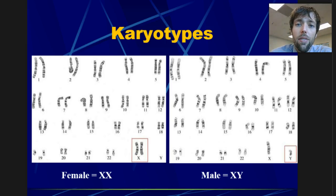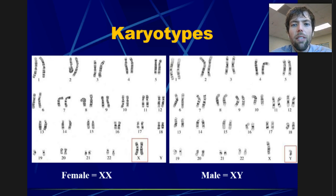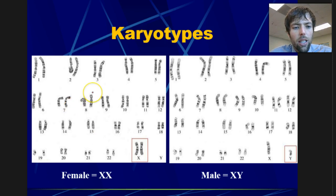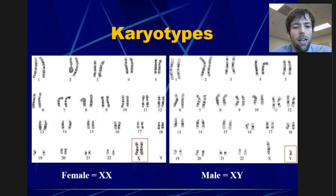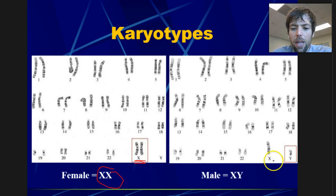In our last set of notes, we looked at chromosomes and genes and how DNA is wound up in these chromosomes and passed on from parents to offspring to give us the unique set of characteristics that make us who we are. We talked about how we have 23 pairs, women having two X chromosomes and men having one X and one small Y.